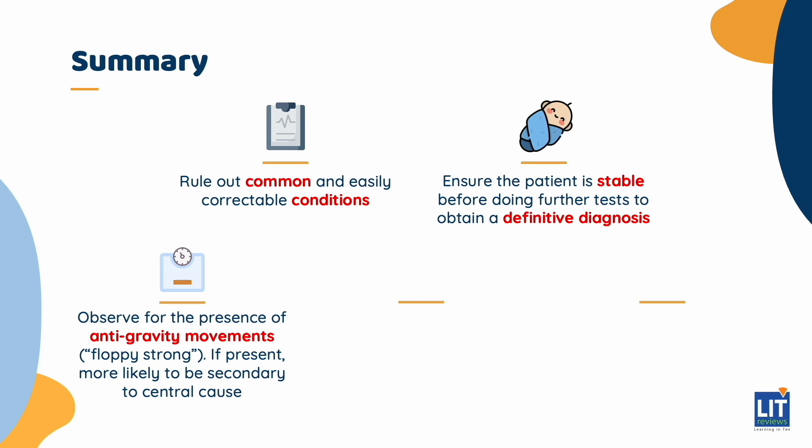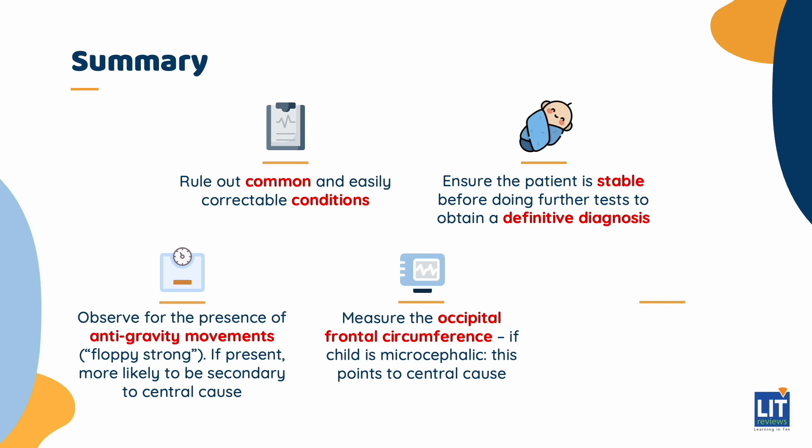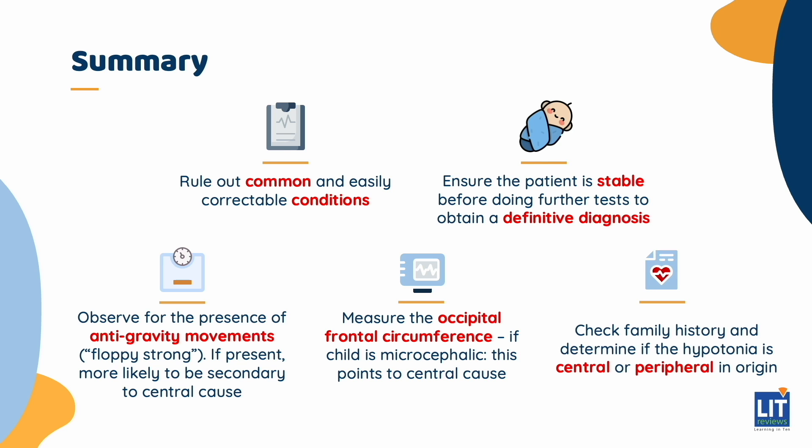Always observe for antigravity movements. If the baby appears to have relatively good power, this is more likely to be hypotonia secondary to a central cause. Check the occipital frontal circumference — if the baby is microcephalic, this points to a central cause. Remember to take a thorough family history. And finally, narrow down the differential by first determining if the hypotonia is central or peripheral in origin.